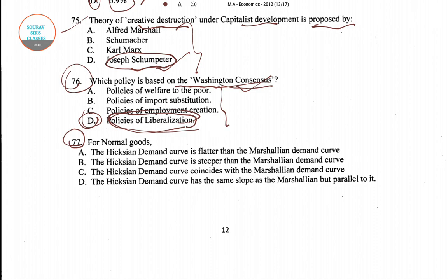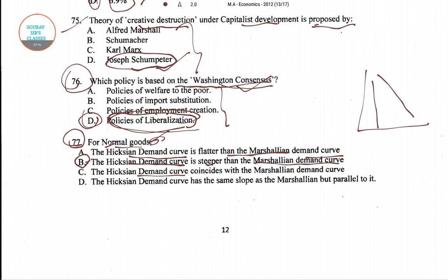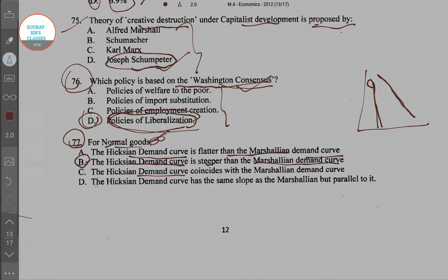Question number 77 asks about the Hicksian demand curve relative to the Marshallian demand curve for normal goods. For normal goods, the Hicksian demand curve is steeper than the Marshallian demand curve, because the elasticity of the Hicksian demand curve is less than the elasticity of the Marshallian demand curve. So option B is the right answer.